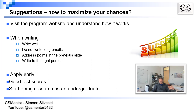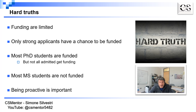If you can, start doing research as an undergraduate, as that is a positive component for getting research funding. Now for some hard truths: funding is very limited — both TA positions at most universities and research assistant positions, which are tied to faculty grants that are difficult to obtain. Only strong applicants will get funded. Look at the list of requirements and ask yourself honestly whether you meet them — if you don't, it is very unlikely you will get funded.